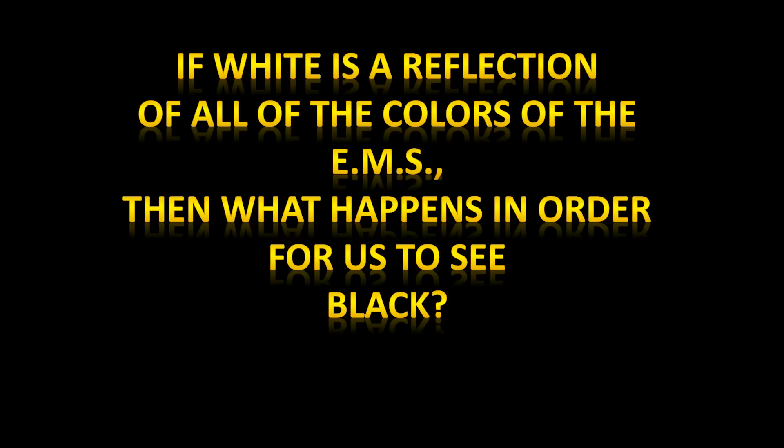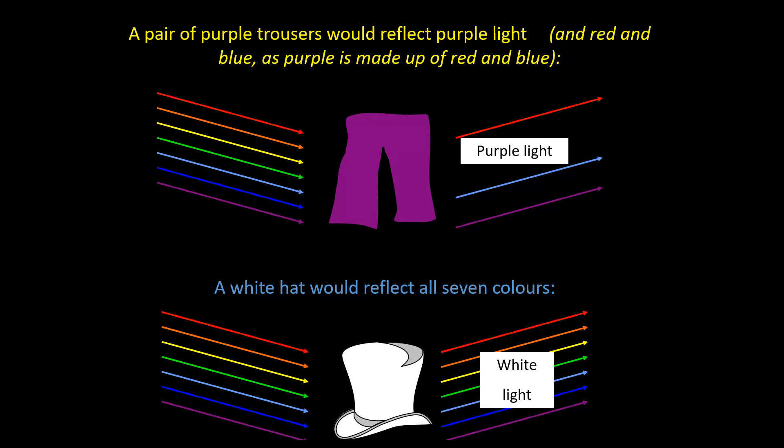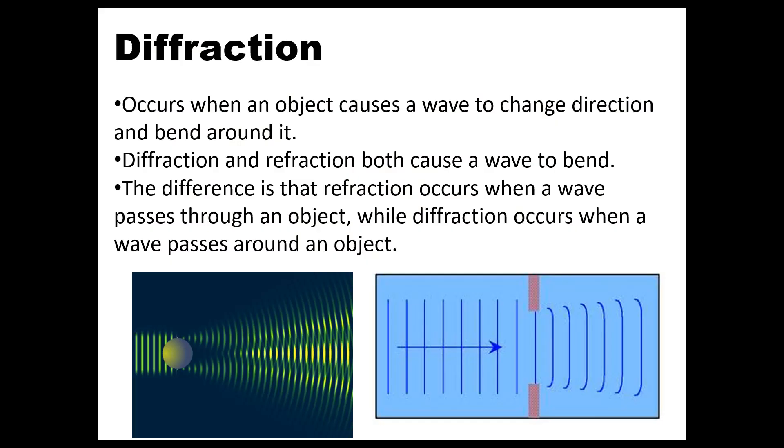So answer this question for me. If that's true, then what happens in order for us to see the color black? And if you guessed that that would be all the colors of the electromagnetic spectrum being absorbed, then you are correct. So we see white when all the colors are reflected. We see black when all the colors are absorbed.